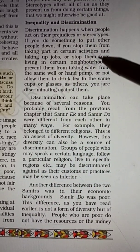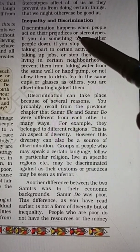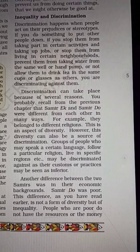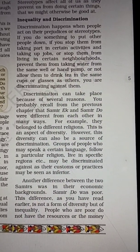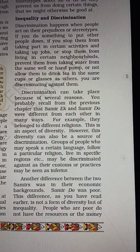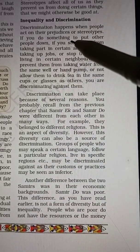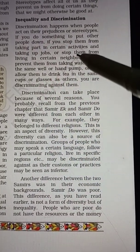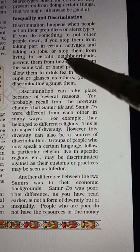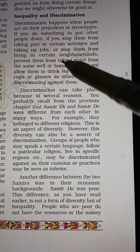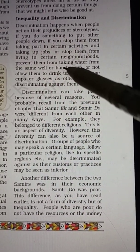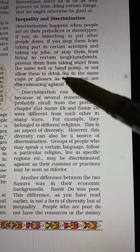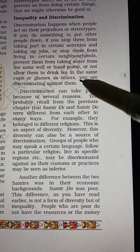Discrimination happens when people act on their prejudice or stereotypes. If you do something to put other people down, if you stop them from taking part in certain activities, taking up jobs, or stop them from living in certain neighborhoods, prevent them from taking water from the same well or hand pump, or not allow them to drink tea in the same cup or glasses as others, you are discriminating against them.